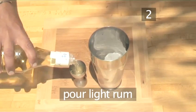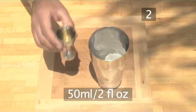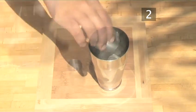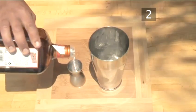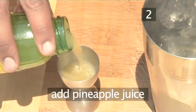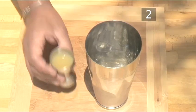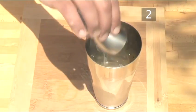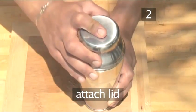Pour out 50 milliliters or a large splash of light rum and pour over the ice. Then add a splash or 10 milliliters of Cointreau. Add 40 milliliters or a large splash of pineapple juice. Place the lid on your shaker and shake well.